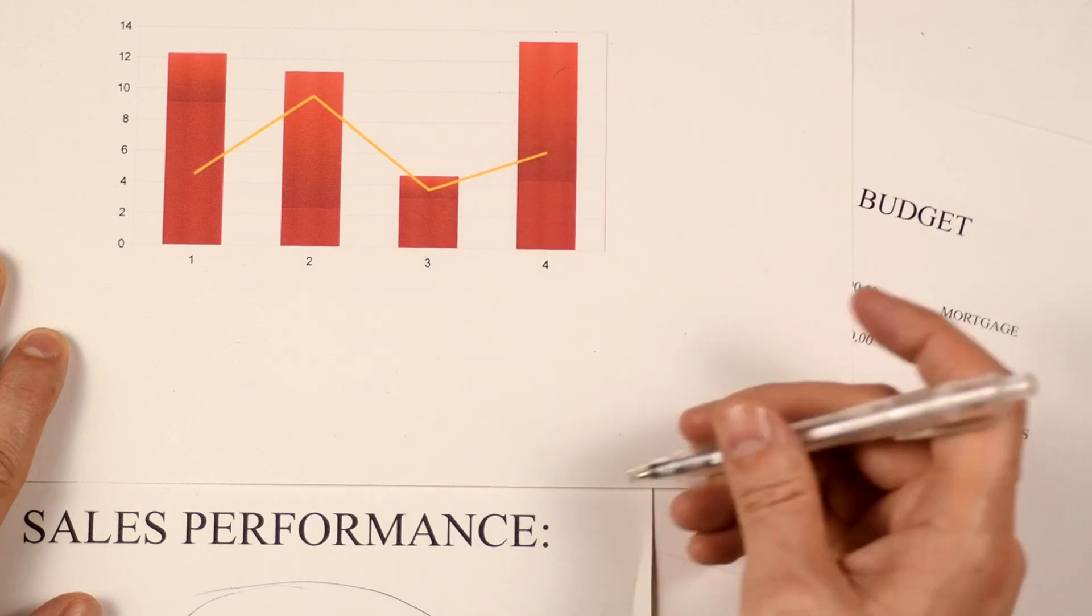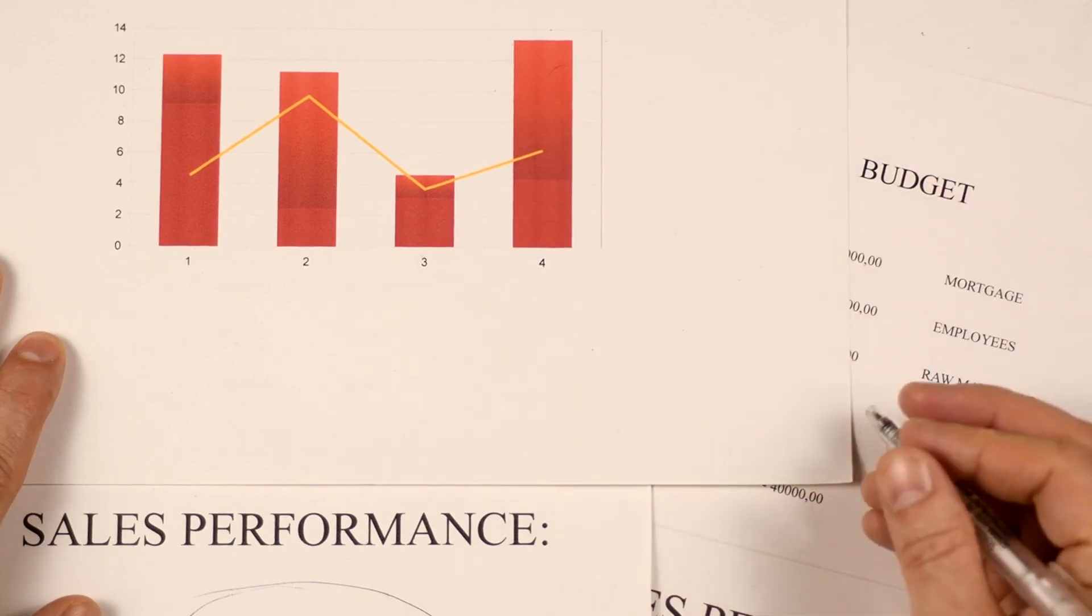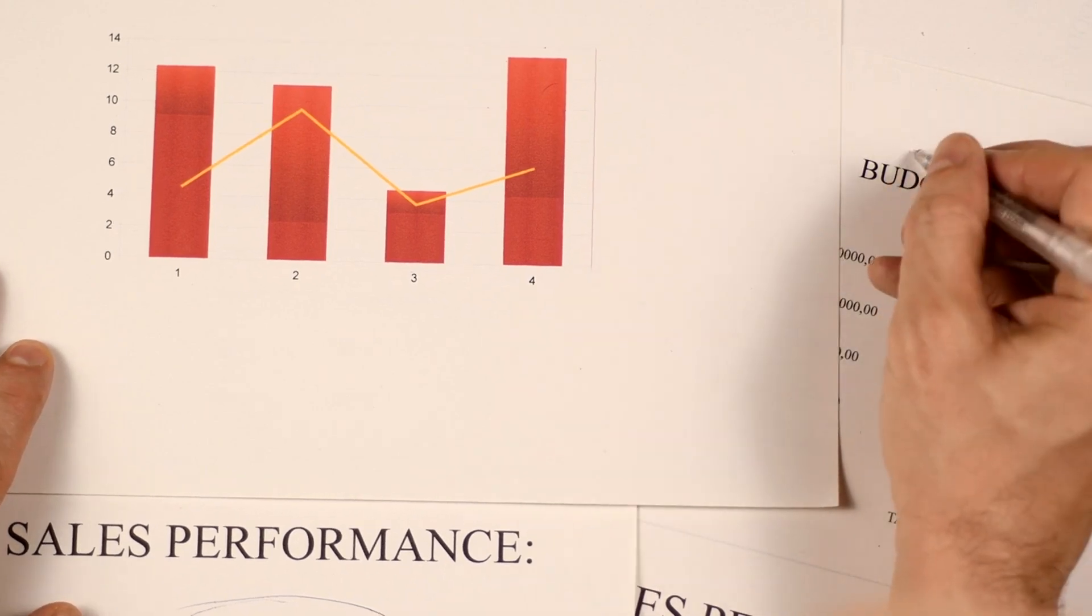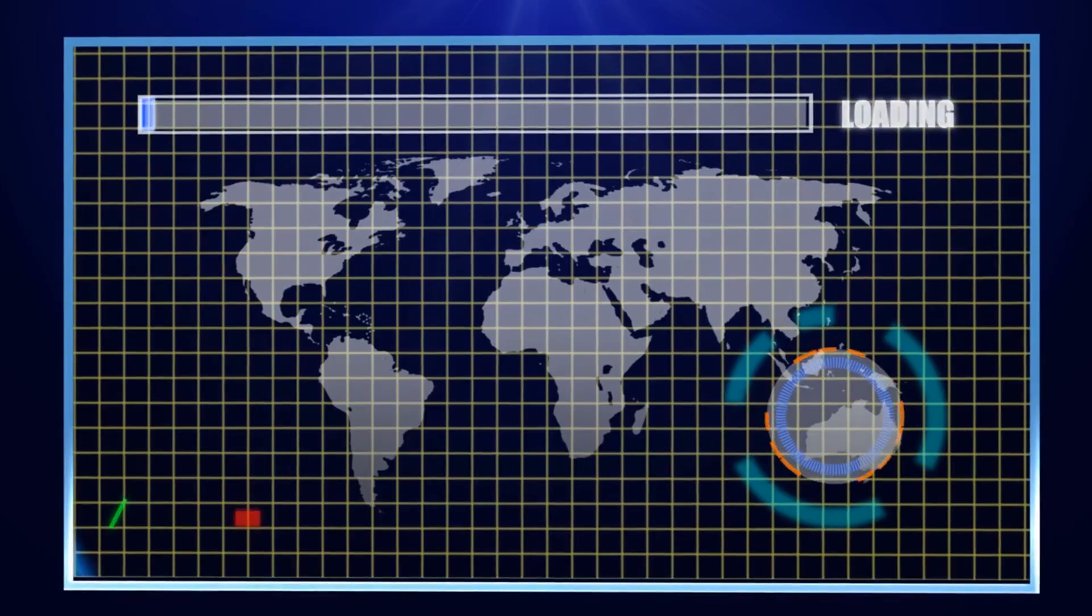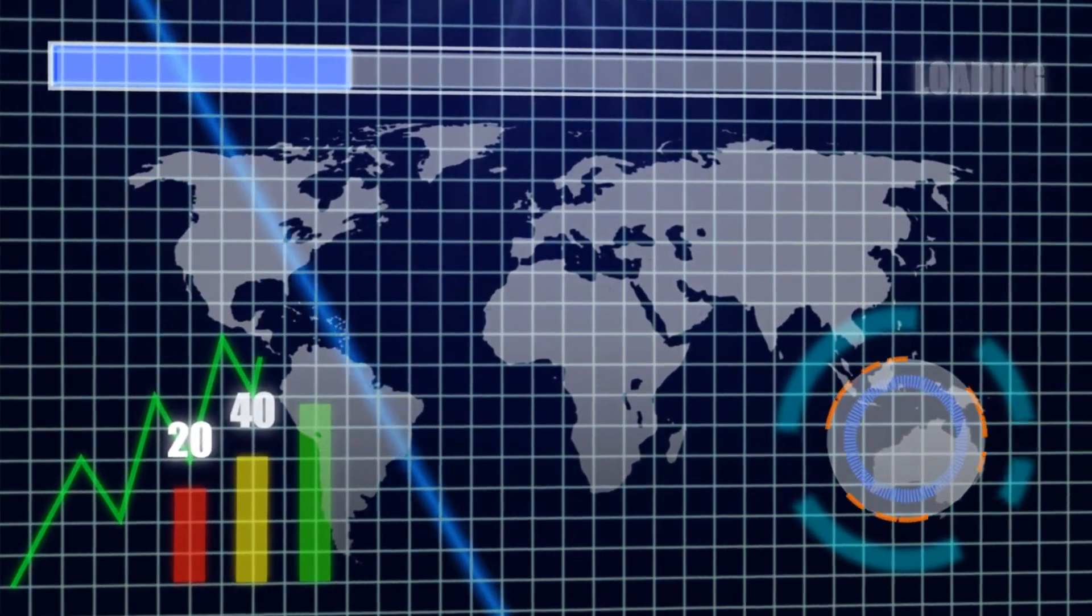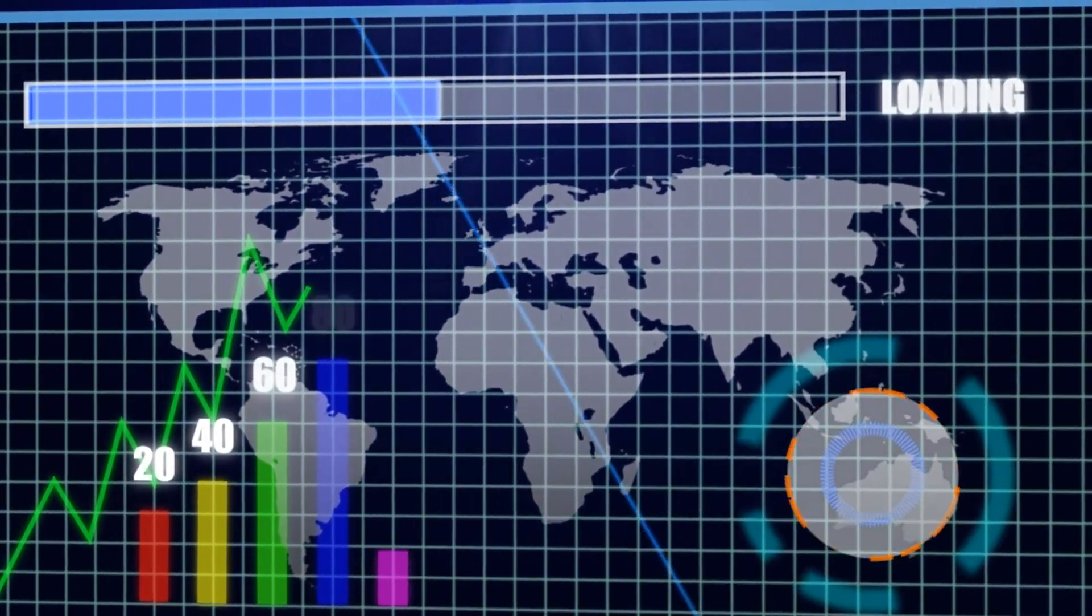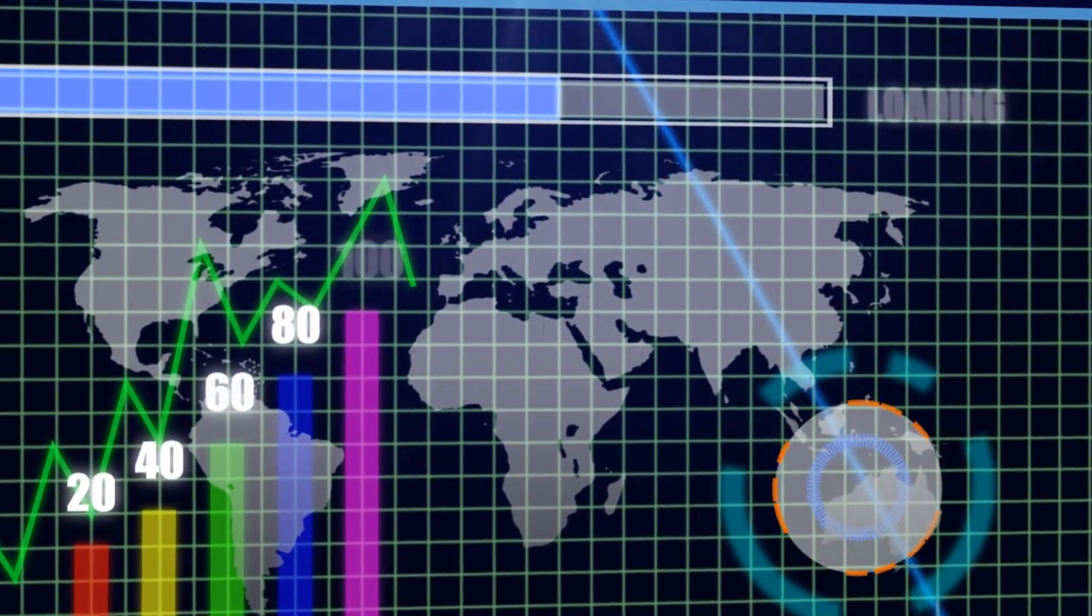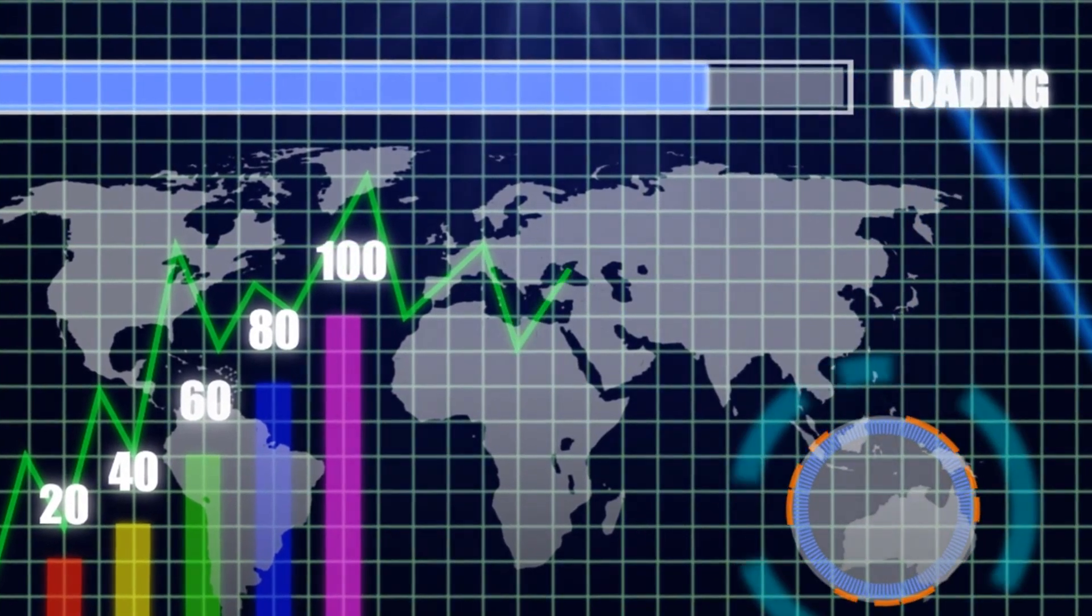The Modigliani-Miller theorem is a foundational concept in corporate finance that reshaped our understanding of capital structure. Formulated by economists Franco Modigliani and Merton Miller in the mid-20th century, this theorem asserts that in a perfect market environment, the value of a firm remains constant regardless of its financing method.